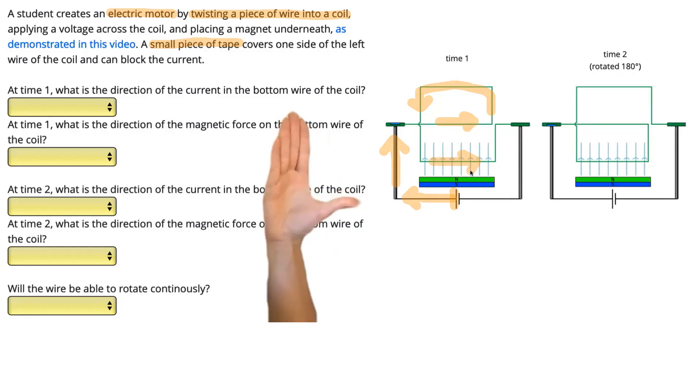I've got my thumb pointing to the right, my fingers pointing upwards in the direction of the field, and so we can see my palm is facing outwards, which means the force is going to be out of the screen towards you.